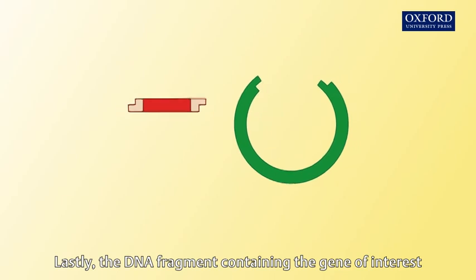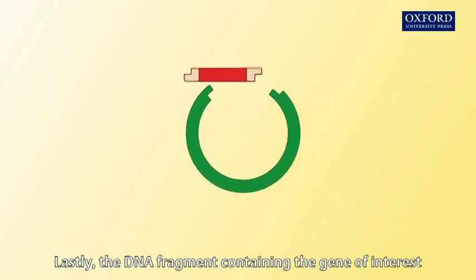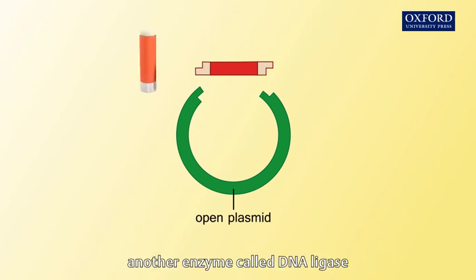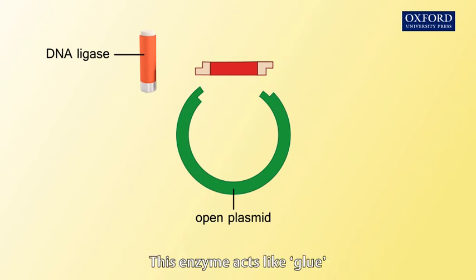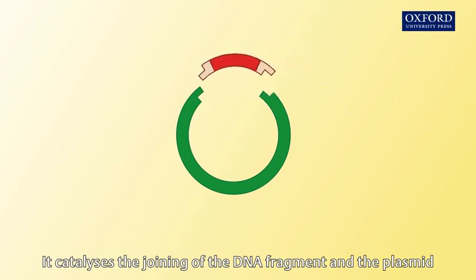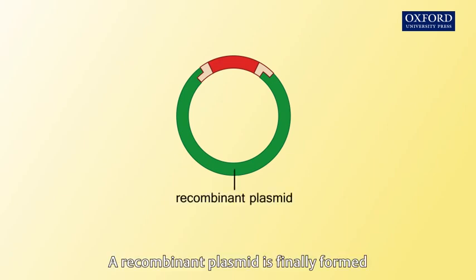Lastly, the DNA fragment containing the gene of interest is inserted into the open plasmid with the help of another enzyme called DNA ligase. This enzyme acts like glue — it catalyzes the joining of the DNA fragment and the plasmid. A recombinant plasmid is finally formed.